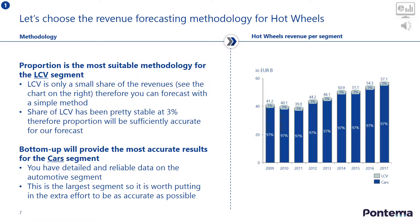Now let's choose the revenue forecasting methodology for Hot Wheels. For the light commercial vehicle segment, proportion is the most suitable approach, because the segment only has a small share of revenues, as shown on the chart on the right. Share of this segment has been pretty stable at three percent, so you can assume this proportion will be sufficiently accurate for our revenue forecast. By contrast, for the cars segment, a bottom-up approach will provide the most accurate results, because you are able to obtain detailed and reliable data on the automotive segment, and this is the largest segment for Hot Wheels, so it is worth putting in the extra effort to be as accurate as possible.